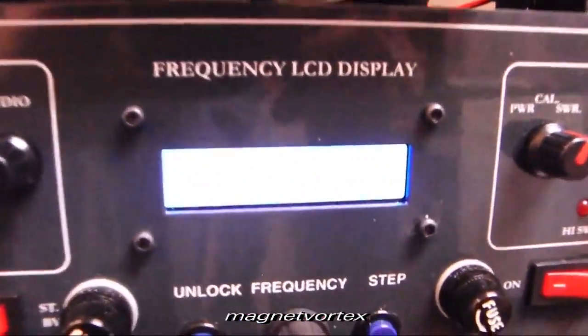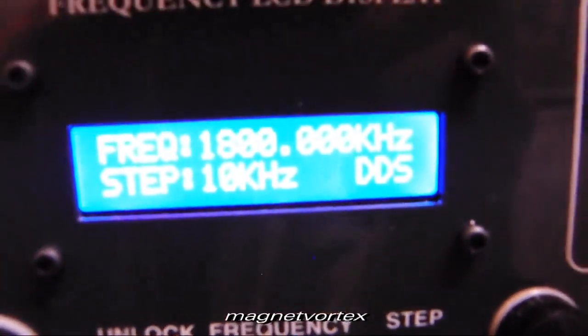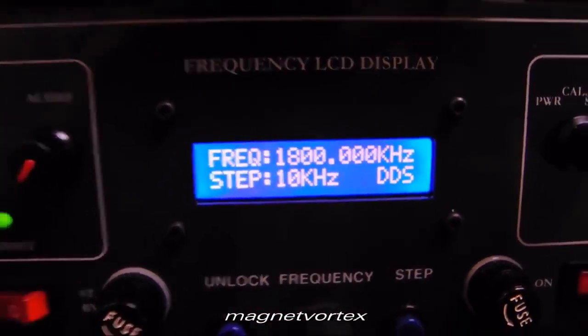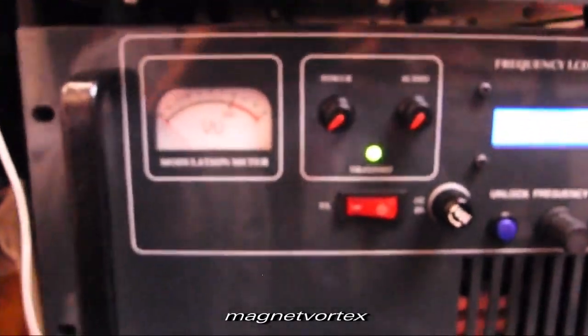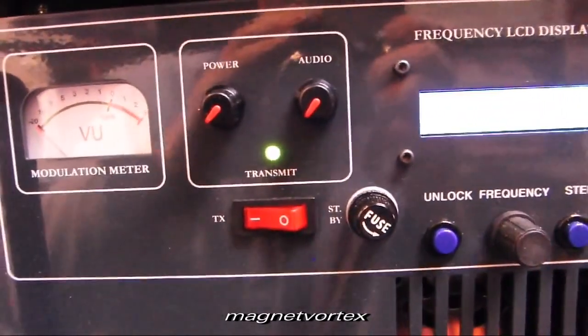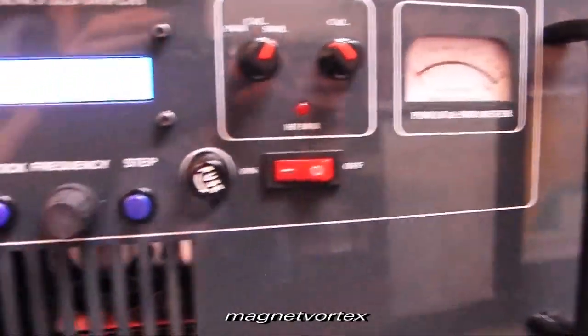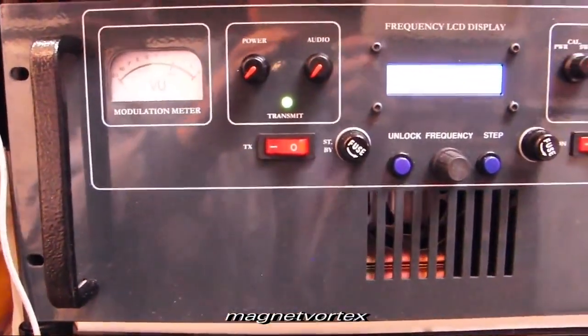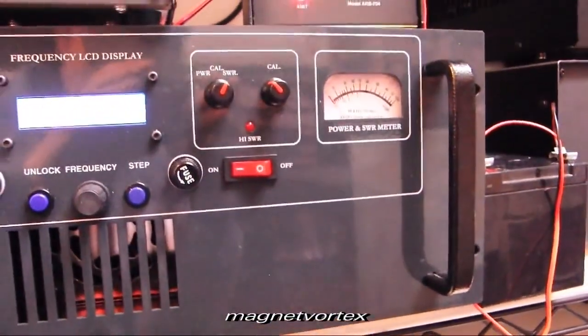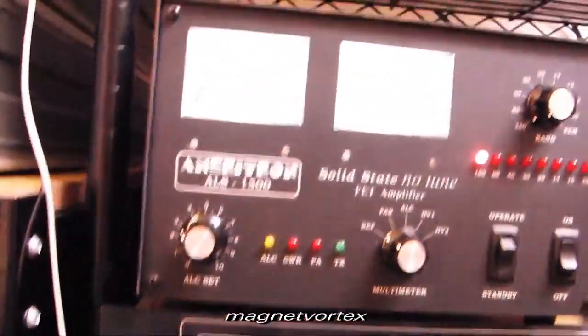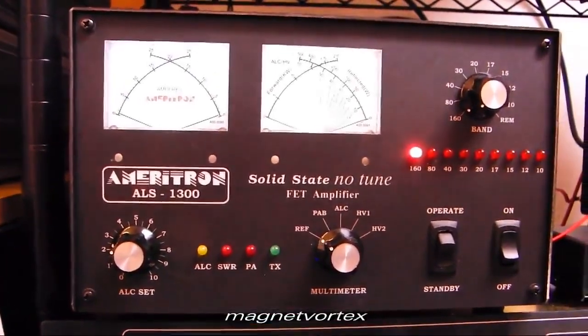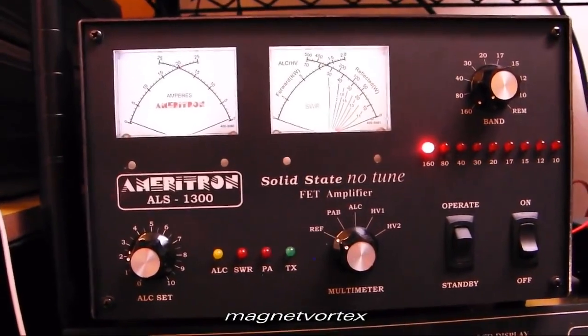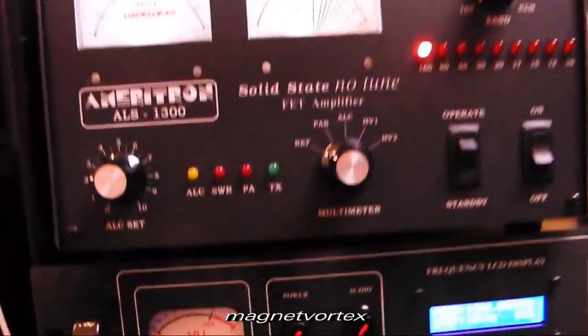It's set right now at 1.8 MHz. That's a broadcast quality transmitter, that's about 500 MHz all the way up to 1.8 MHz. This here is my Ameritron 1300 solid state, one and a half kilowatt linear amplifier.